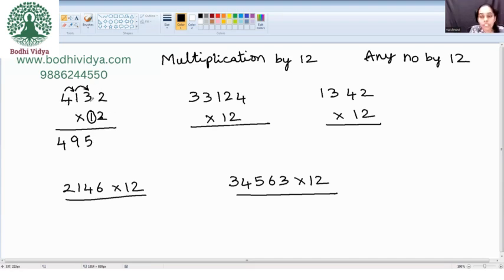Now, 2 into 3 is how much? 6. 6 plus 2 is how much? Add it with the consecutive number. 6 plus 2 is 8. 2 into 2 is how much? 4. We don't have anything next to it. So, it's 0. We end it up here. So, this is your final answer. Mind blowing, right? Let's have a look at few more examples.